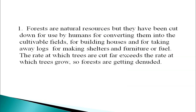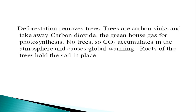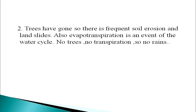Deforestation removes trees, which are carbon sinks that take away carbon dioxide — the greenhouse gas — for photosynthesis. Without trees, carbon dioxide accumulates in the atmosphere and causes global warming. The roots of trees hold the soil in place; with trees gone there is frequent soil erosion and landslides. Trees lose a lot of water through transpiration. This helps in forming rain clouds, so cutting of trees and clearing of forests reduces rainfall in the area. Also, removal of plants and trees leads to soil erosion.